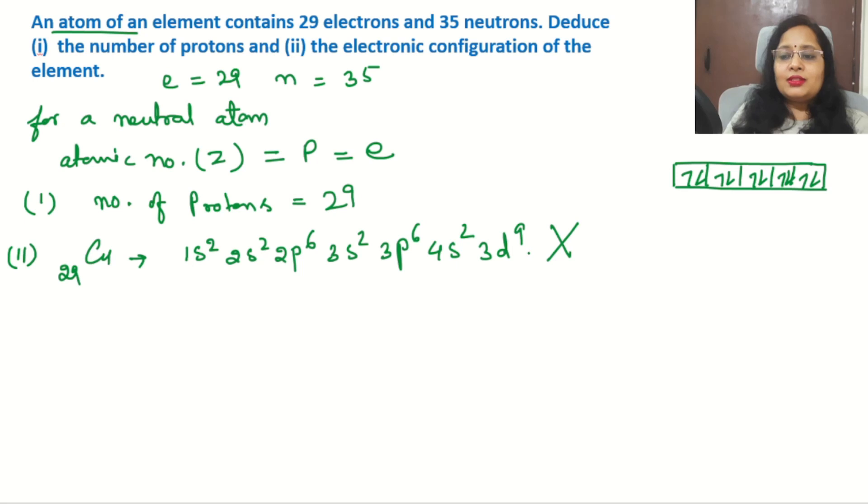Now in this case 3d⁹ it is highly unstable and the d subshell wants to become stable. So what it is doing? Normally it snatches one electron from 4s orbital and makes it stable. So the actual configuration for copper 29 is 1s² 2s² 2p⁶ 3s² 3p⁶ 4s¹ and 3d¹⁰. This is the correct and actual configuration of copper 29. This is the exception case you have to remember.